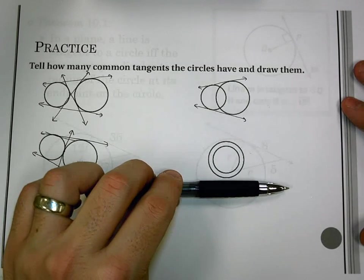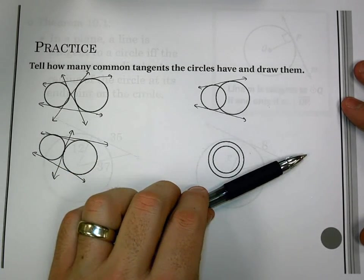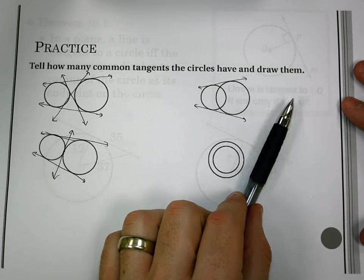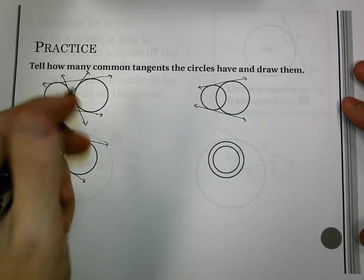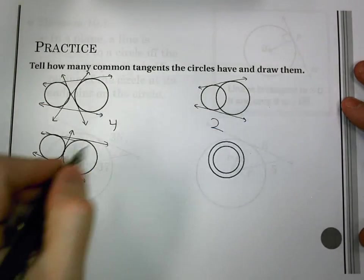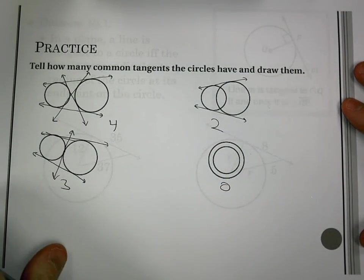If I think of the tangent that's on the outside of this circle, it's never going to quite get inside to be a tangent to the other circle. So that would have none. So four, two, three, none.